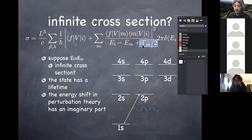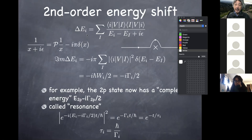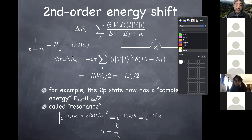The way you compute this imaginary part of the energy is using this result from second-order perturbation theory on the energy shift. Because of the i-epsilon prescription, if you remember the identity in the contour integral, it gives you precisely the imaginary part you need. Just by using this identity in the contour integral, you can derive that the imaginary part of the energy of the 2p state turns out to be related to the decay rate.